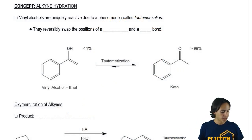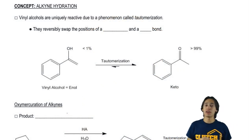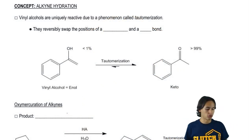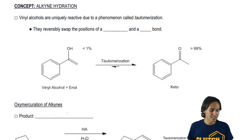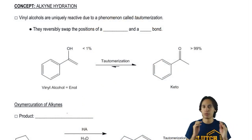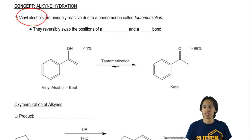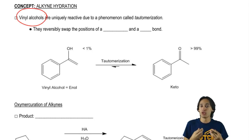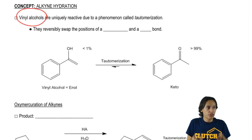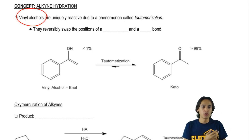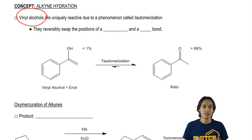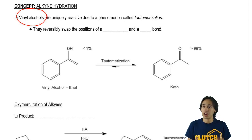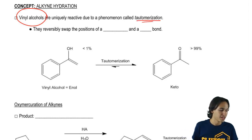Any time that you make a vinyl alcohol — that's the name for basically having an alcohol directly on a double bond — it's going to react very uniquely. It's not going to react like the addition reactions we saw with double bonds. In fact, this is going to undergo a phenomenon called tautomerization.